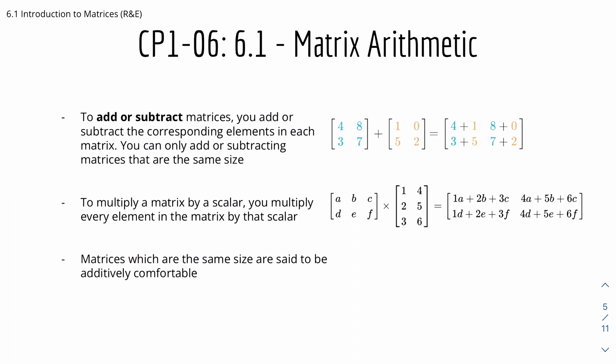And to multiply a matrix by a scalar you multiply every element in the matrix by that scalar. For example, if we have A of 1, 2, 3, 4, 5, 6, in this case A is the scalar and this is the matrix. So it would be A, 2A, 3A, 4A, 5A and 6A like so. And matrices which are the same size are said to be additively conformable.